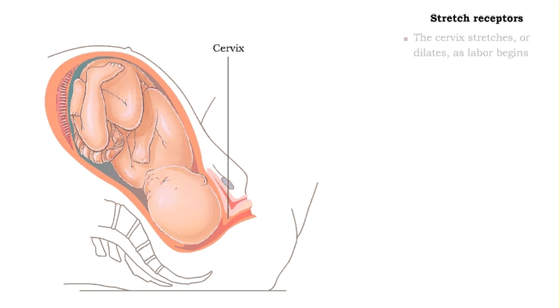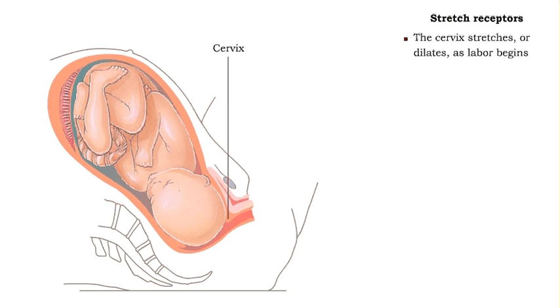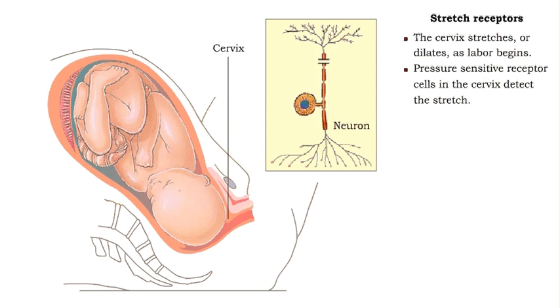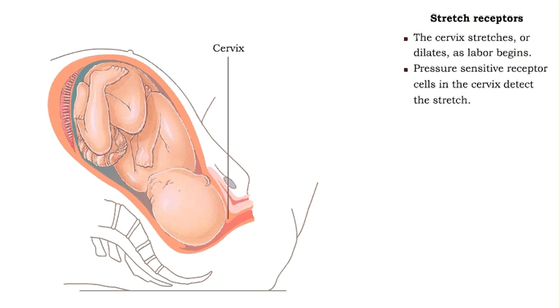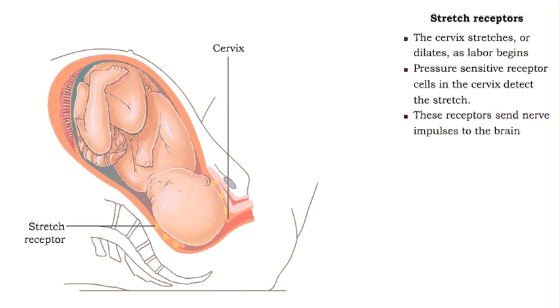When the baby reaches the cervix, the cervix becomes distended or stretched. Receptor cells detect the stretch and change in the controlled condition of the cervix, and send impulse signals to the brain.